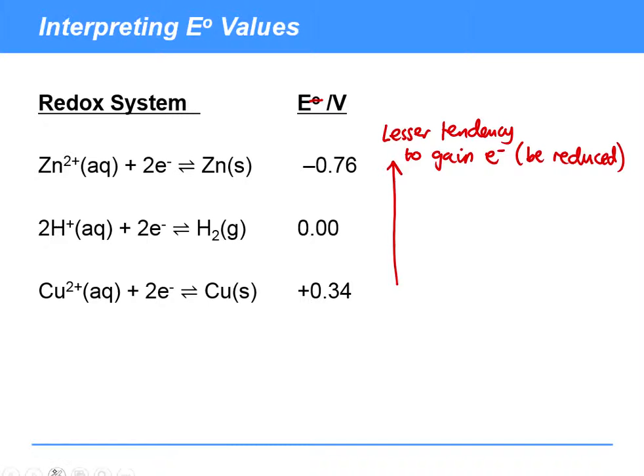Whereas down the bottom here, these ones further down, these ones have a greater tendency to gain electrons. So the more positive you are, the greater tendency you have to gain electrons. The further the equilibrium is to the right. So this equilibrium further to the right.